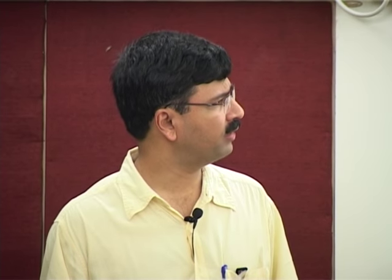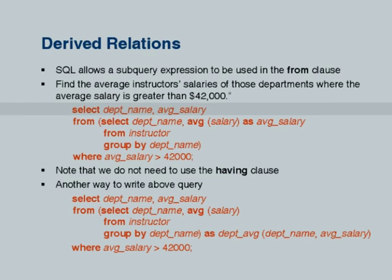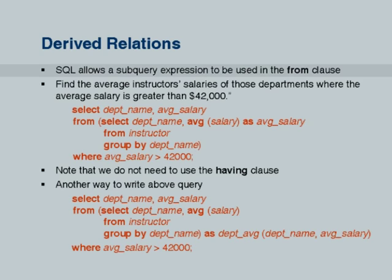Subqueries can also be used in the FROM clause. Technically in SQL they are called derived relations. Here is an example where we want to find average instructor salaries of all departments where the average salary is greater than $42,000. What we do is first compute department name and average salary using a subquery over instructor GROUP BY department_name. On top of this subquery we use it in a FROM clause just like a relation name, then check if average salary is greater than 42,000.